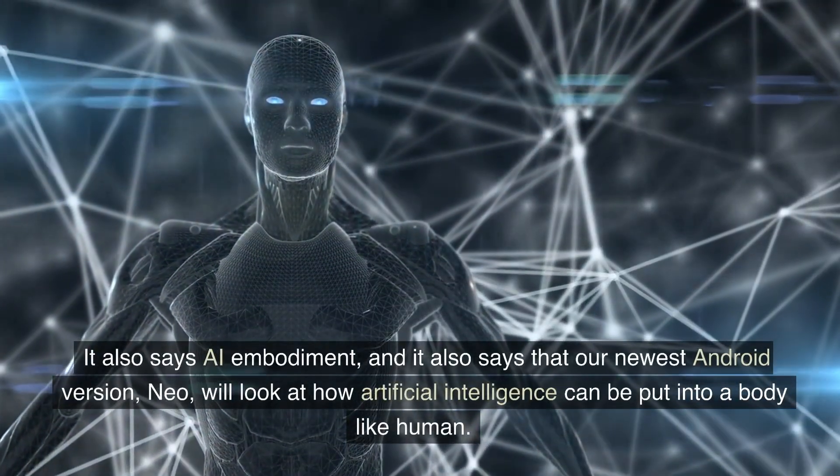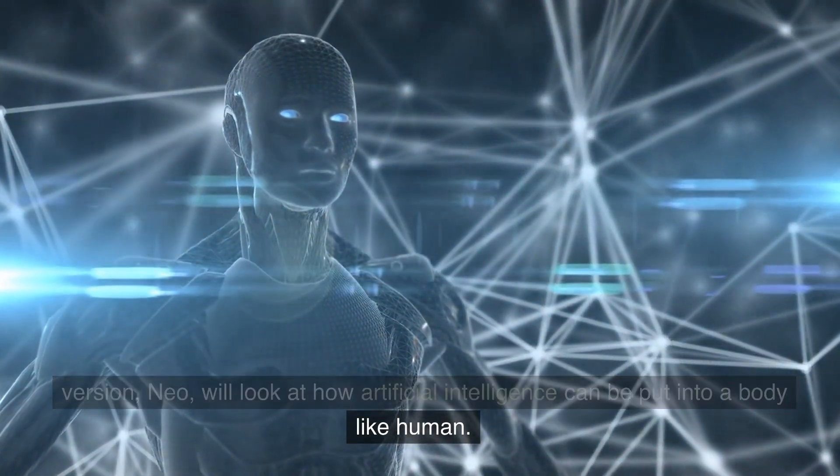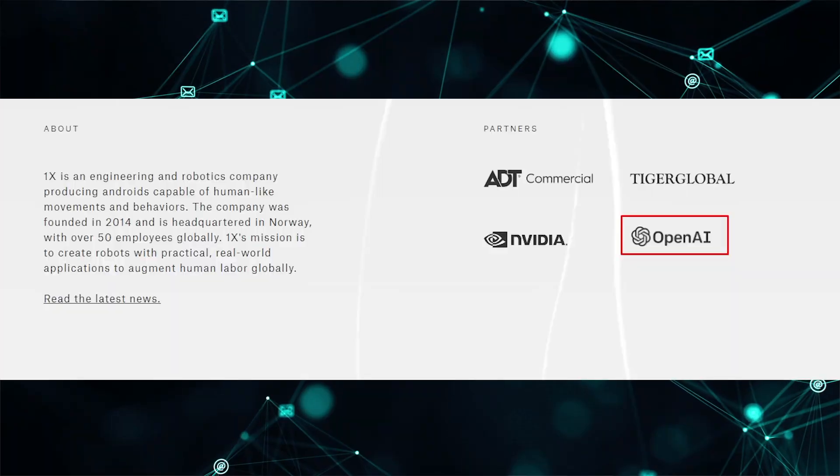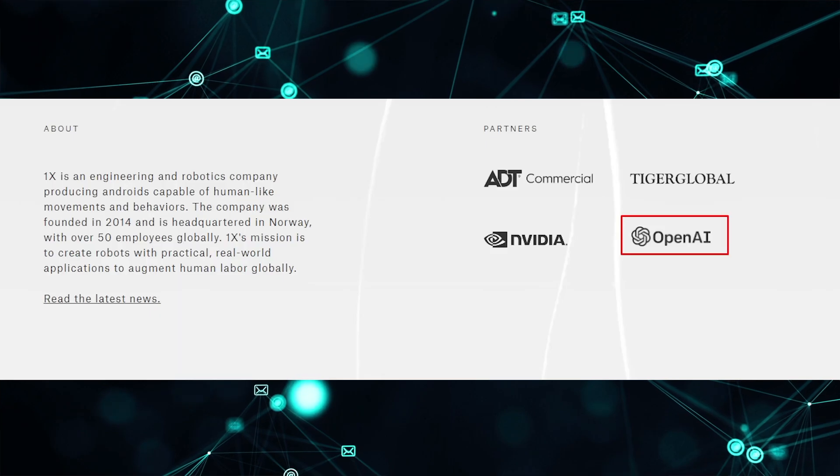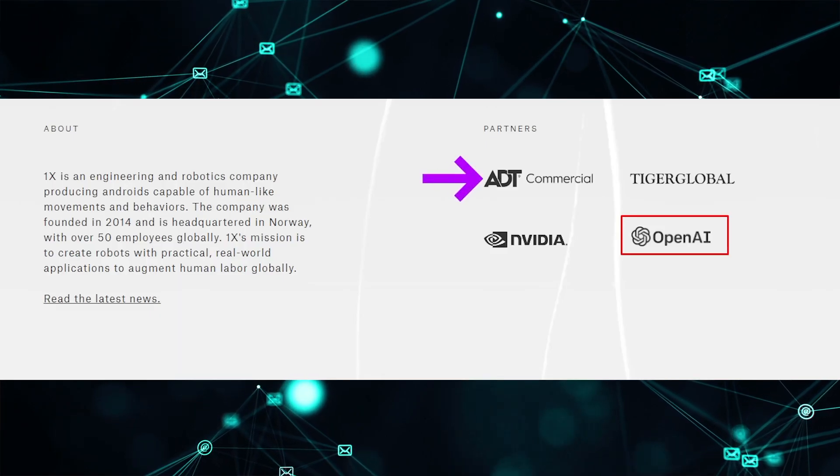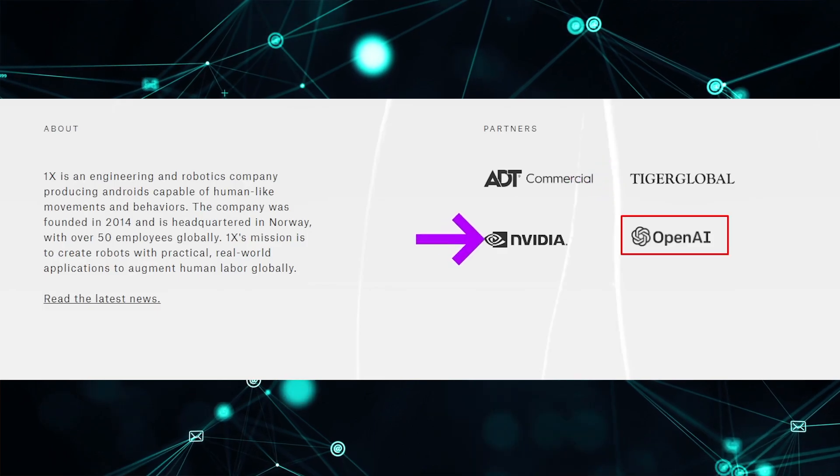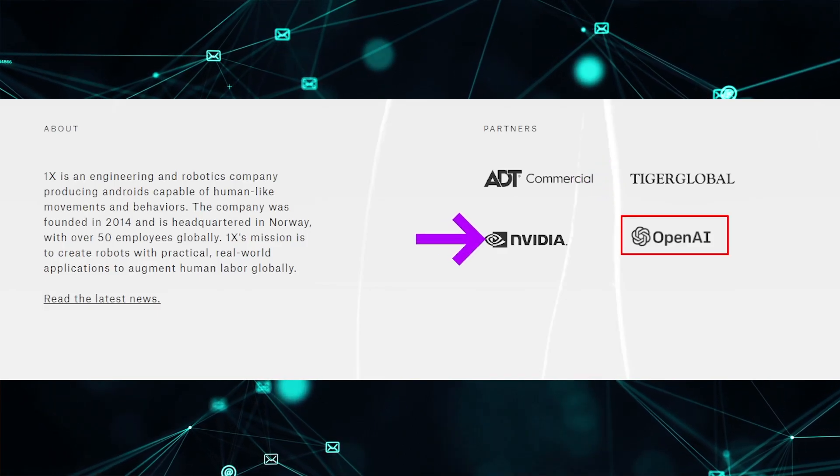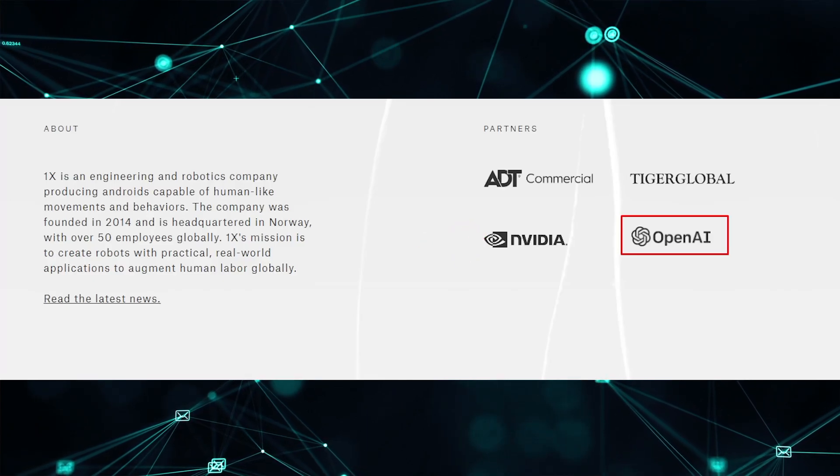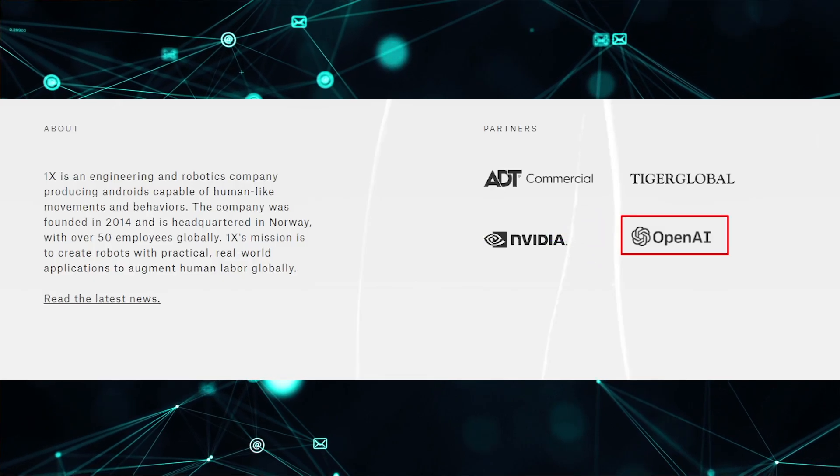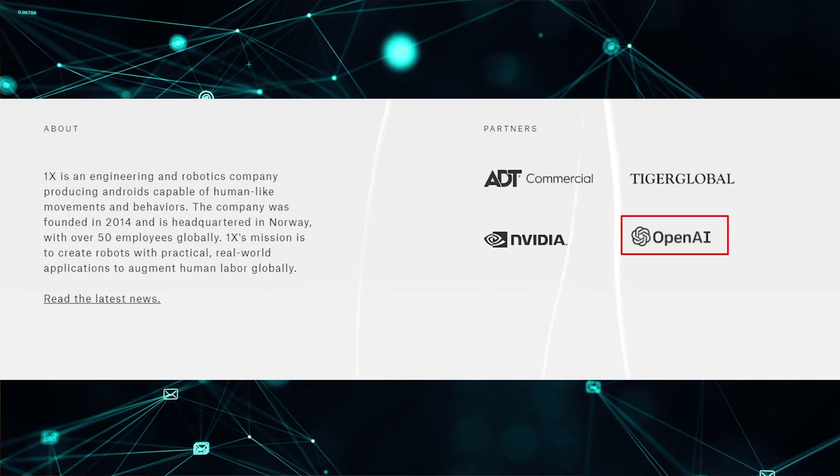It says AI embodiment and it also says that our newest Android version Mio will look at how artificial intelligence can be put into a body like human. Four companies are working with this new robotics company: ADT Commercial, a security company, Tiger Global finance company, NVIDIA which makes the chips that run the software, and last but not least, OpenAI, which is the only company on the partner list that actually makes large language models.